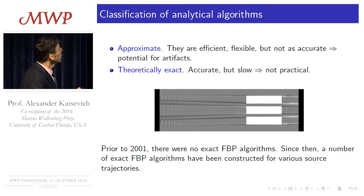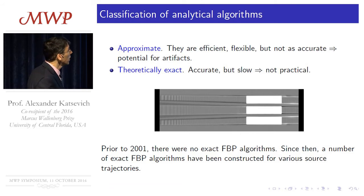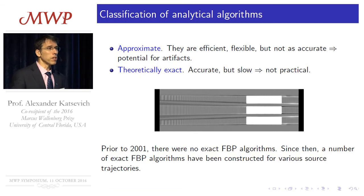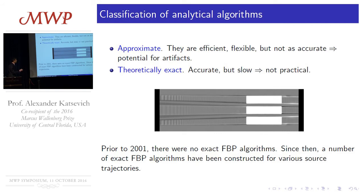Analytical algorithms can be classified as approximate or theoretically exact. Approximate algorithms are efficient — meaning FBP — so you can reconstruct quickly, and they're flexible, but they're not accurate by nature. When exact data comes in, an image with some artifacts may come out. This is an example of a simulated human torso: you see these ugly streaks coming off of the vertebra — those are artifacts caused by the non-exactness of the algorithm.